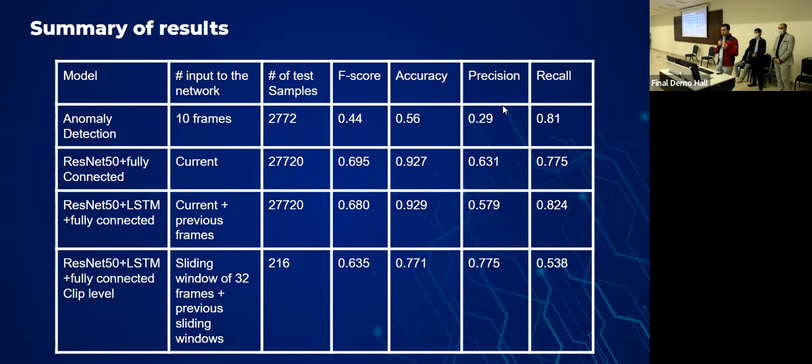Also, our first hypothesis was also proved correct as the ResNet-50 plus LSTM performed slightly better than the ResNet-50 plus the fully connected layers. On the accuracy, it's just a minimal difference with 0.2%. But in the recall, the difference is very large, and it can be seen that the ResNet-50 plus LSTM plus the fully connected layers was much better on a frame level.